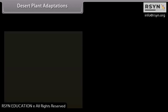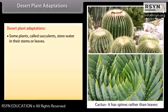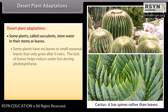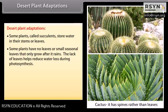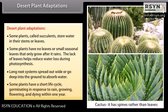Desert plant adaptations include succulents that store water in their stems or leaves. Some plants have no leaves or small seasonal leaves that only grow after it rains, which reduces water loss during photosynthesis. Long root systems spread out wide or go deep into the ground to absorb water. Some plants have a short life cycle, germinating in response to rain, growing, flowering, and dying within one year.